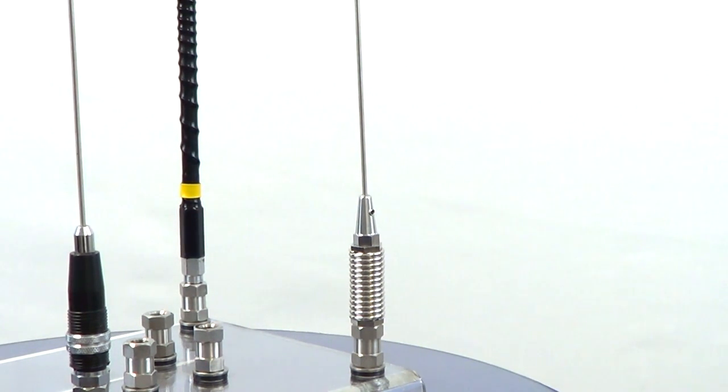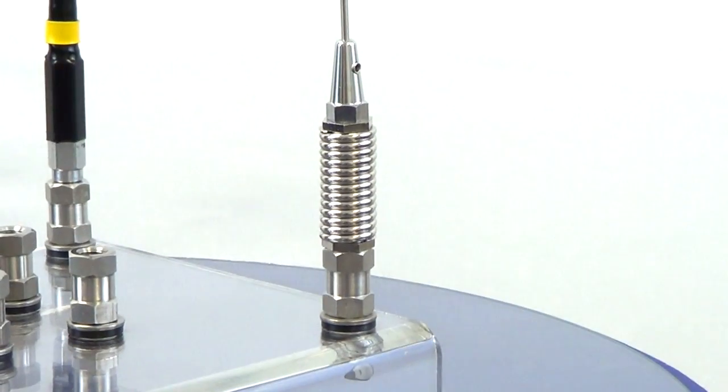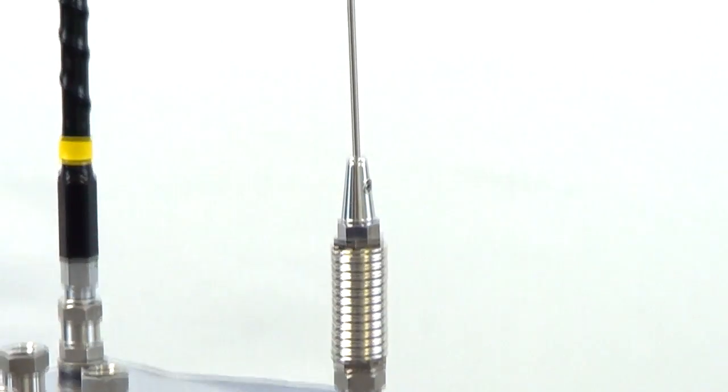First we're going to start with this antenna here on the right. You can see it is just a whip with a coil on the base. It goes all the way up to the tip there. It's got a little ball on the top.